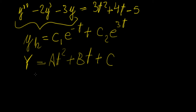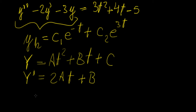Now what we're going to do is take the derivatives of this, so y prime is going to be 2at plus b, and y double prime is going to be 2a.